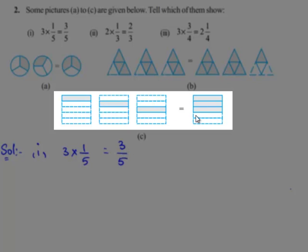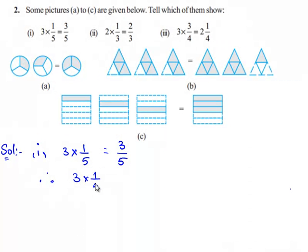Therefore, this represents a rectangle having 5 parts out of which 3 parts are shaded. Therefore, the fraction 3 times of 1 by 5, which is equal to 3 by 5, is shown in drawing C.